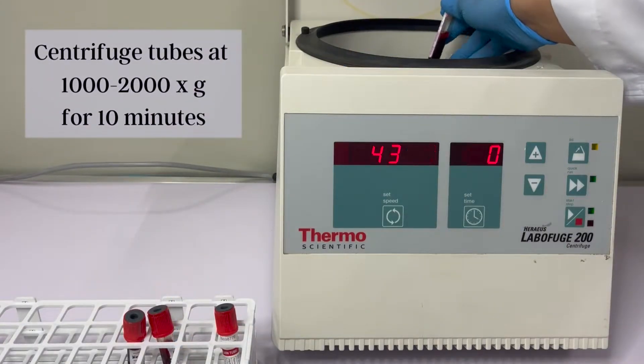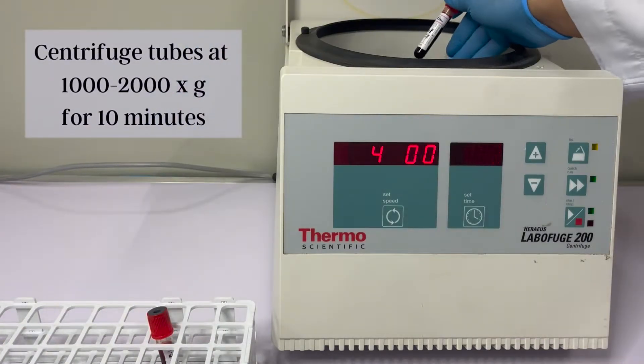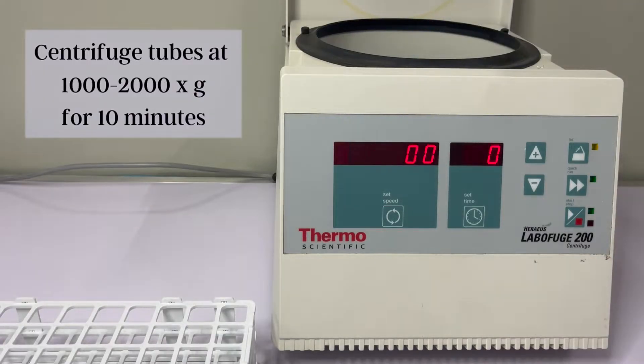Next, centrifuge the clotted tubes at 1,000 to 2,000 G's for 10 minutes.